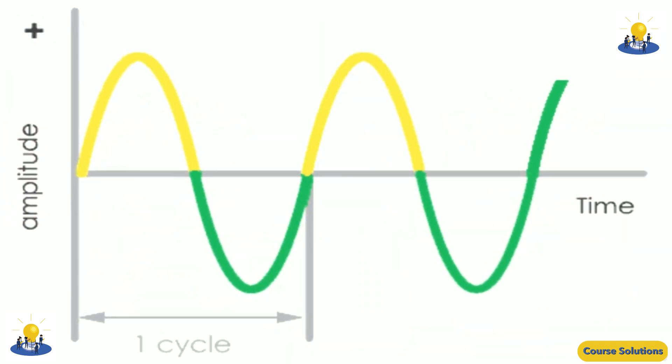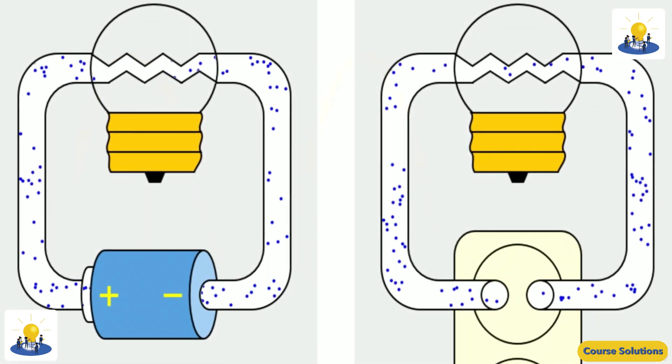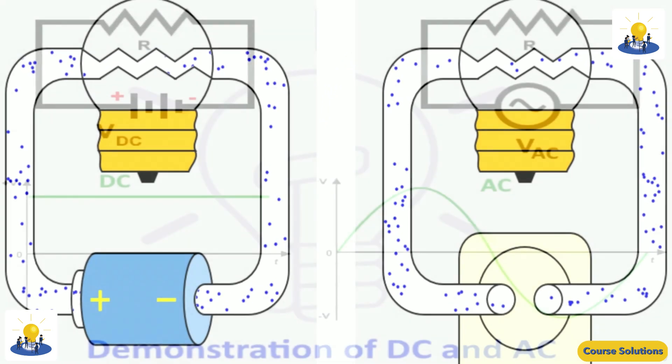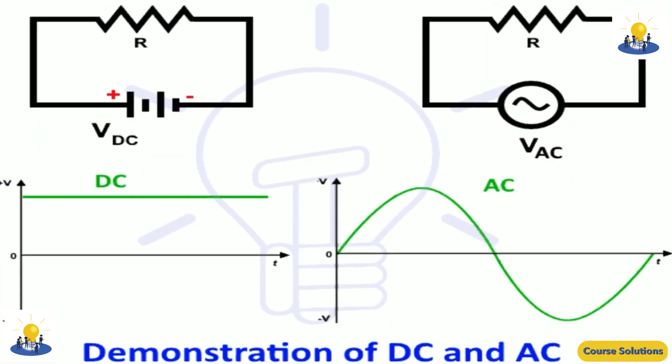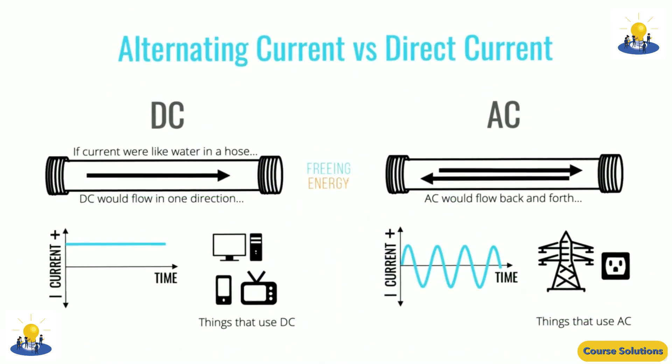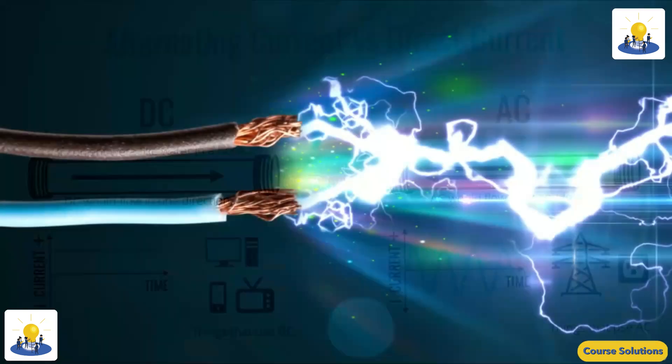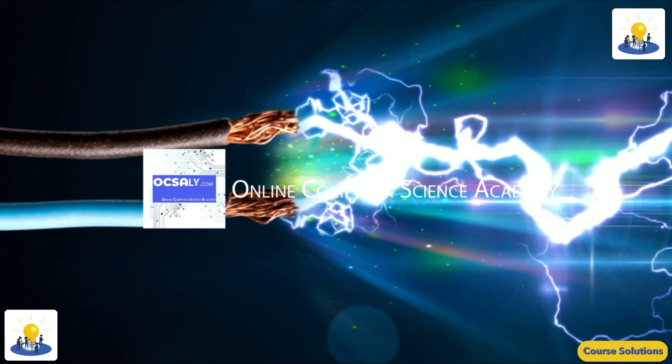Alternating current is used in nearly all the world's power distribution systems, for the simple reason that AC current is much more efficient when it's transmitted through wires over long distances. All electric currents lose power when they flow for long distances, but AC circuits lose much less power than DC circuits.